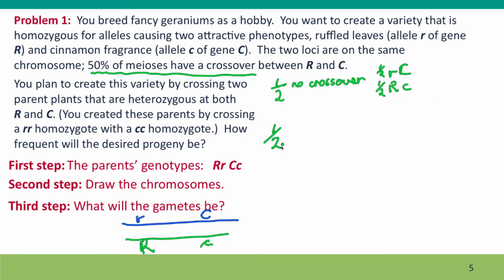The other half of the meioses are going to have a crossover. In those meioses, we're still going to get two—half of the time, half of the gametes will have the parental genotypes. So of these, a quarter are going to be little r, big C, and a quarter are going to be big R, little c. The other half will be the chromatids that participated in the crossover, and they'll be recombinant. So we'll have a quarter big R, big C, and a quarter little r, little c.